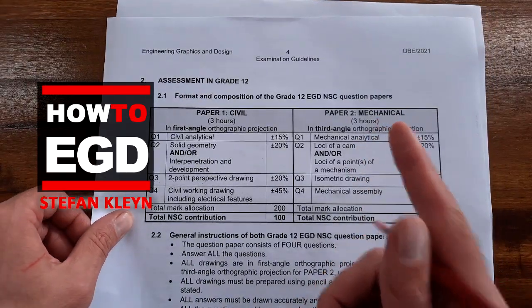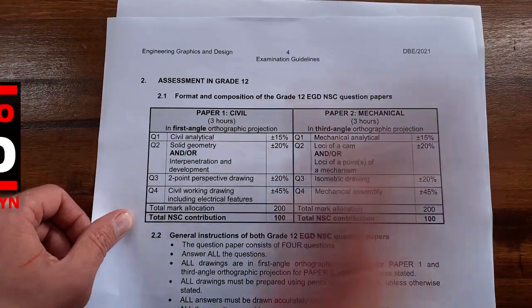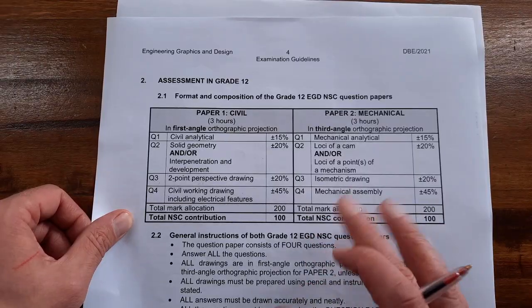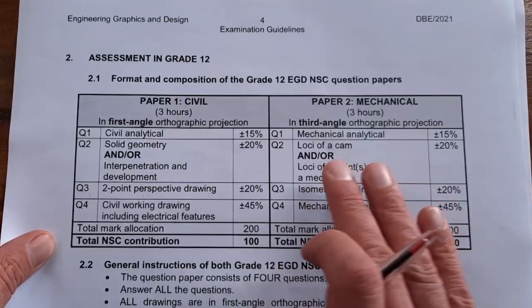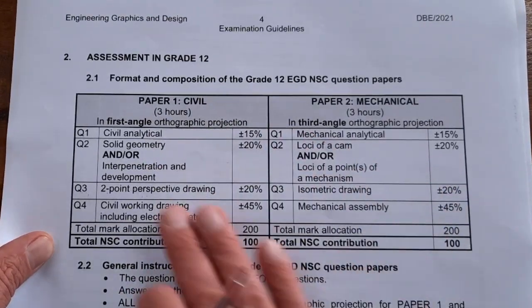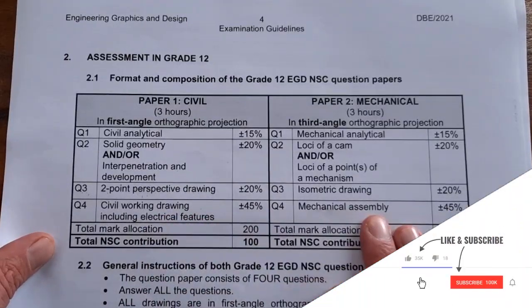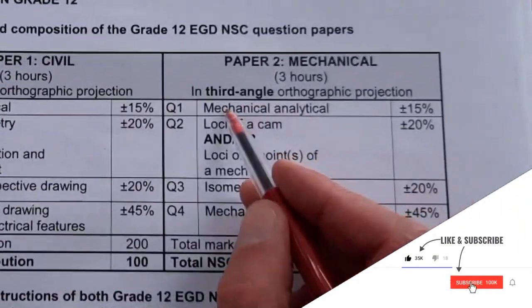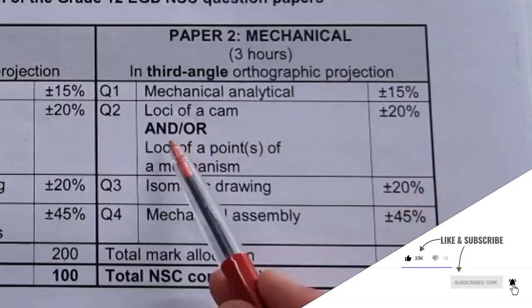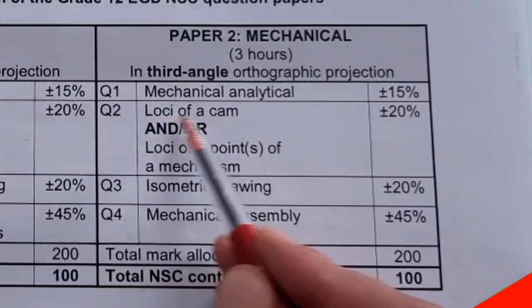Right, Grade 12, this is How to EGD and we are smacking your final exams by going deep into what you can expect in your two papers, Paper 1 and Paper 2. We've just gone through Paper 1, finished mechanical analytical in Paper 2, and we're now looking at Question 2: loci of a cam and loci of a point of a mechanism.